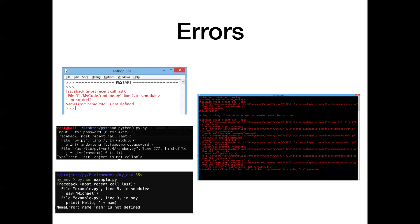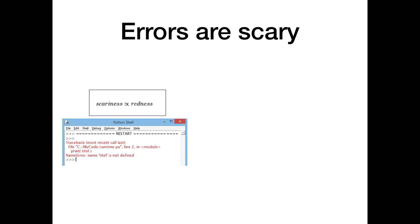Errors always look scary — the redder they are, the scarier they are. The scariness of an error is directly proportional to the amount of redness you see on screen. We also know that typically the scarier the error, the easier it is to solve. The hardest errors are actually those where you don't get much of an error — just a short line or sometimes no error at all, and it just doesn't seem to work. What you see — the red traceback — is called an error stack. It shows you the flow of steps the program was trying to execute when it failed. By reading this stack you can understand where it failed, and once you understand that, you can go and correct it. The essential idea is that you need to read your error stack and Google the right thing.